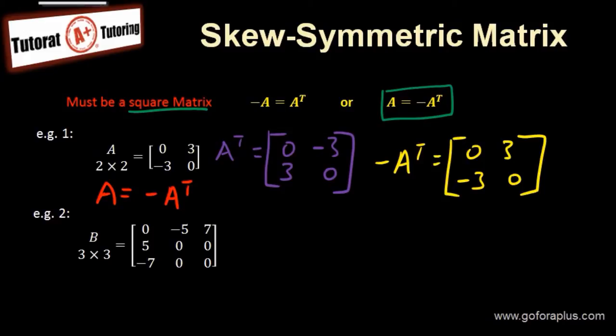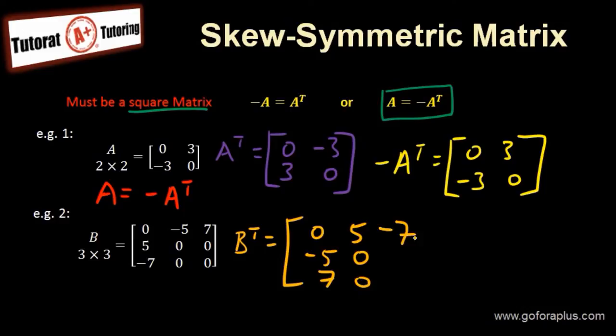Let's look at example B. Now if we take the transpose of matrix B, this is equals to 0, minus 5, 7. This is the first row, so it becomes first column. Second row becomes second column. Last row becomes last column.